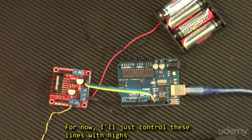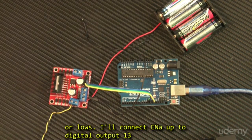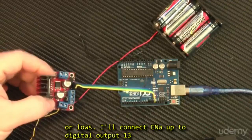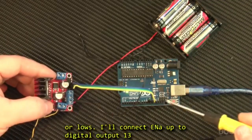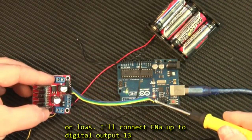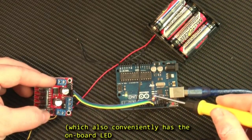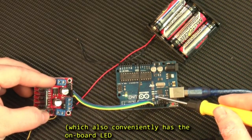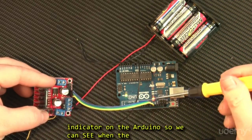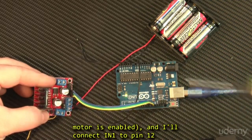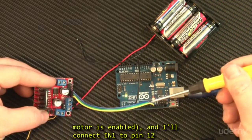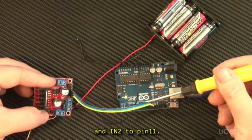For now, I'll just control these lines with highs or lows. I'll connect EN A up to digital output 13, which also conveniently has the onboard LED on the Arduino so we can see when the motor is enabled, and I'll connect IN1 to pin 12 and IN2 to pin 11.